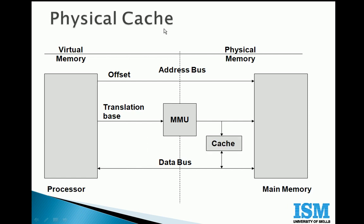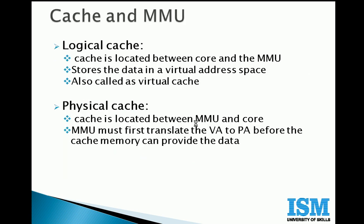If the same cache is introduced after MMU, this cache holds again the recently accessed data from main memory, but the cache is now addressed using physical address. We call this a physical cache. In logical cache, the cache is located between the core and MMU, and stores the data in the virtual address space — also called a virtual cache.